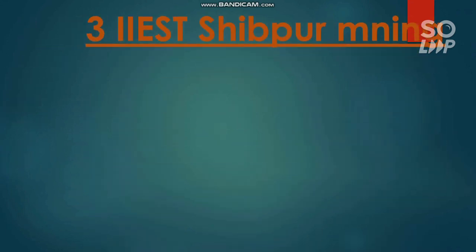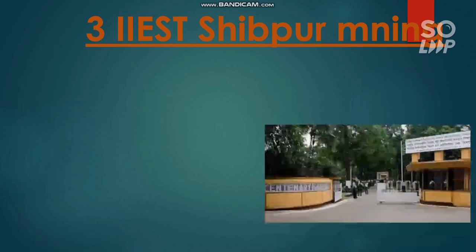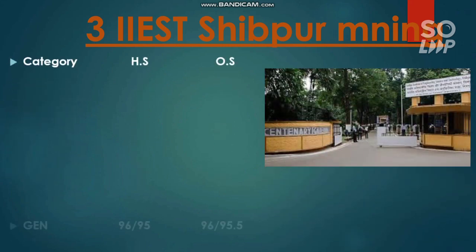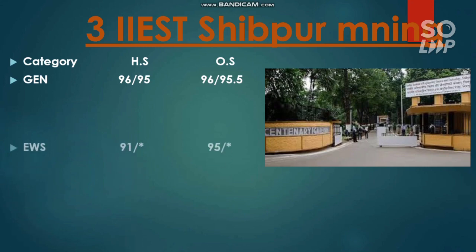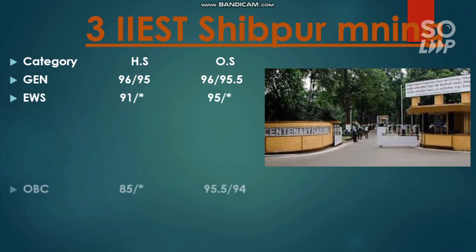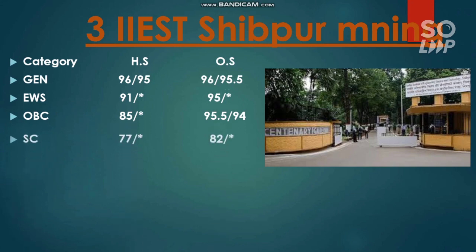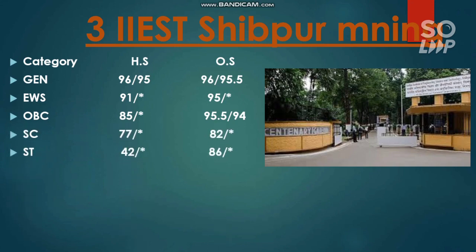The next one is IIEST, where Mining Engineering has the lowest cutoff. For General: 96 and 95.5 percentile. For EWS: 95 percentile. For OBC: 95.5 and 94 percentile. For SC: 74, 84, and 82 percentile. For ST: 86 percentile required to clear the cutoff.